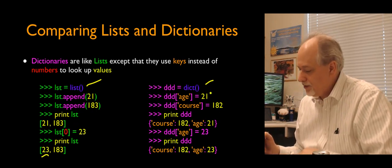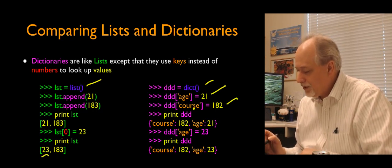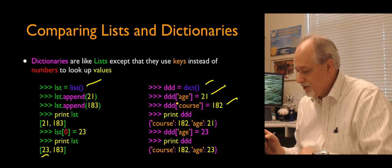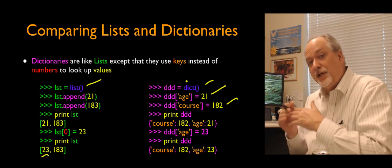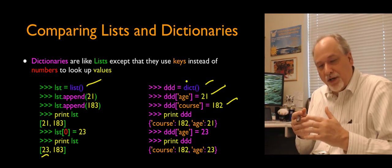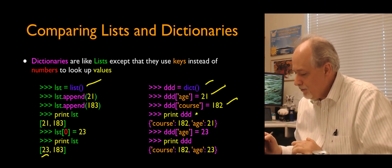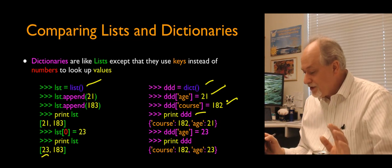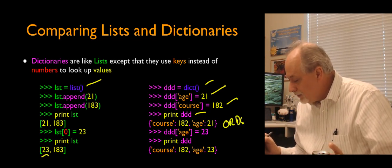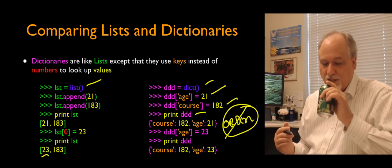Comparing that to dictionaries: I'm going to put 21 in there with the label 'age', then put 182 with the label 'course'. When we print it out it says 'course is 182 and age is 21.' This emphasizes that order is not preserved in dictionaries.